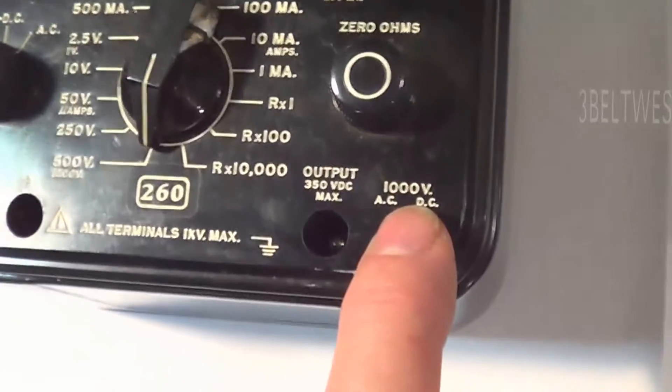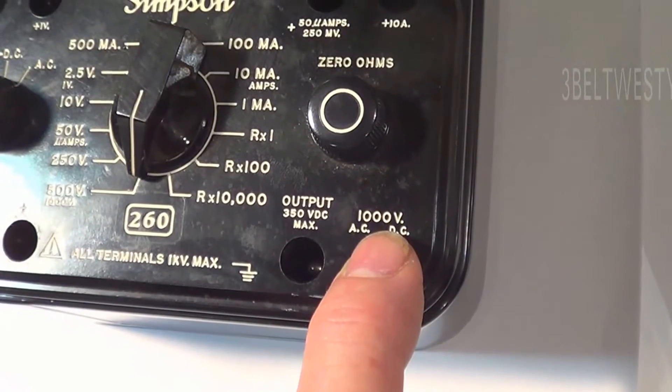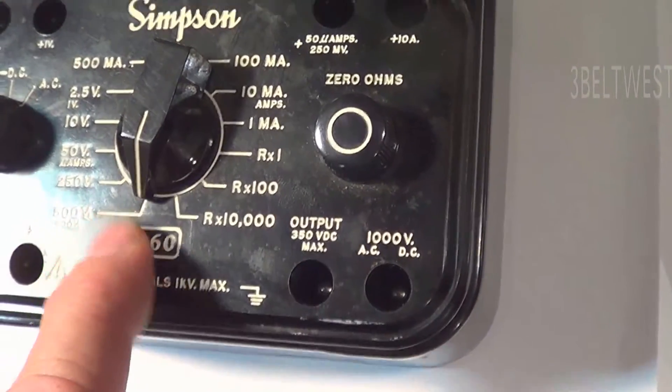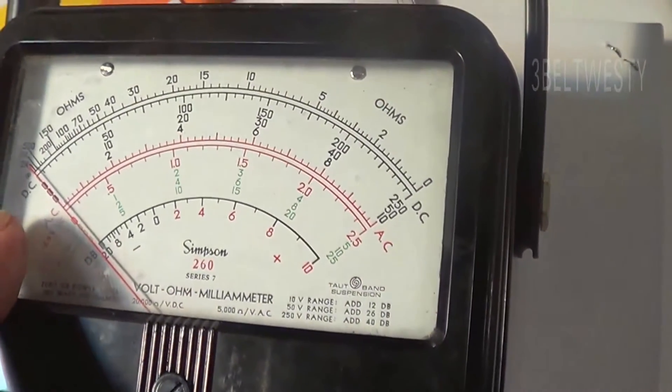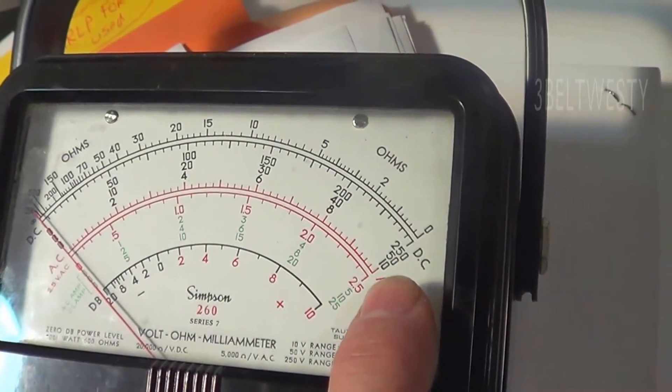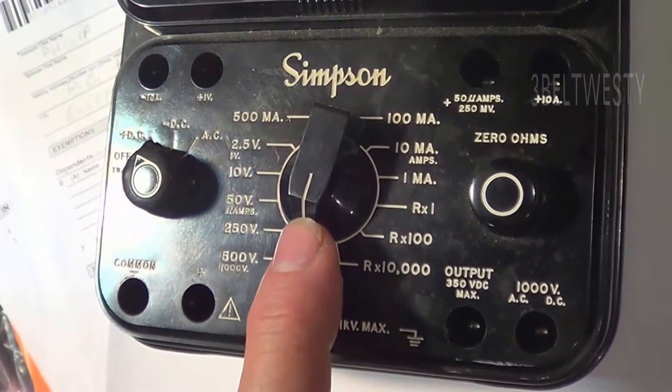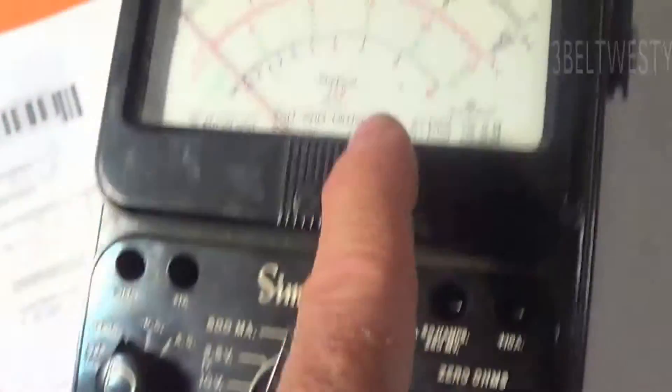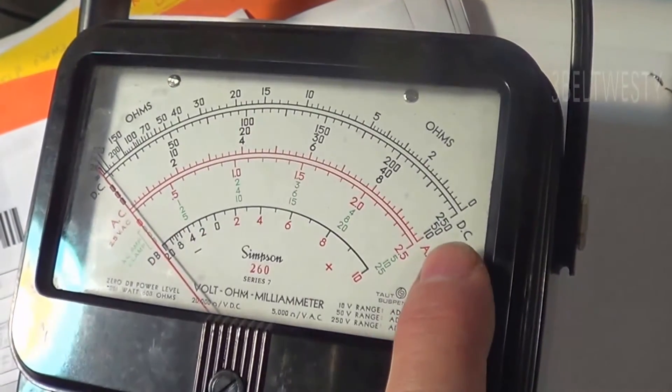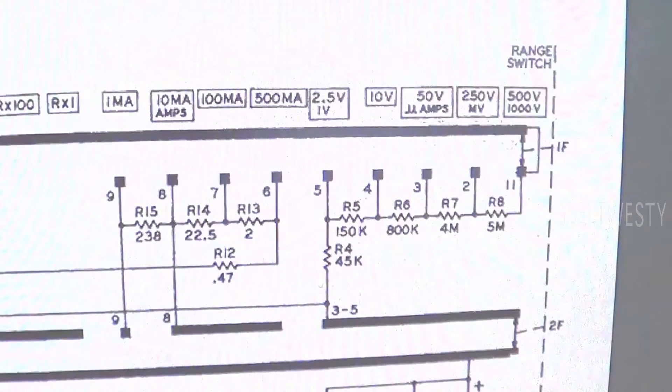And then when you use this as the positive input, it should read to a thousand. So normally I've used this in the past, this would be 500 volts here with this setting. Leave this knob in the same position, put the input over here at a thousand, it should read a thousand volts full scale.